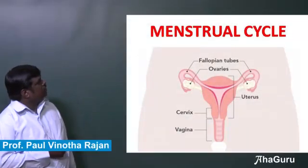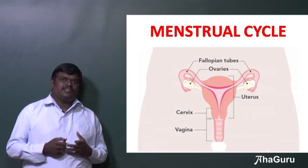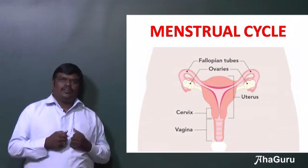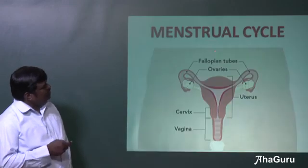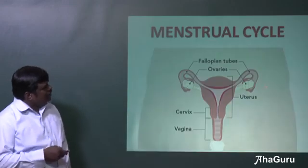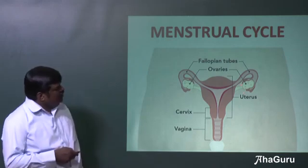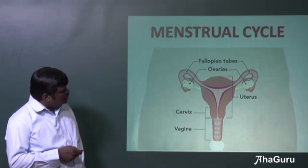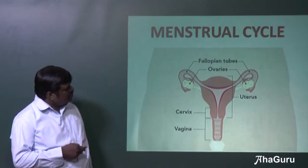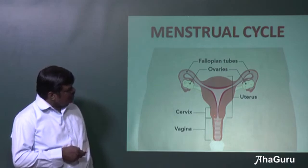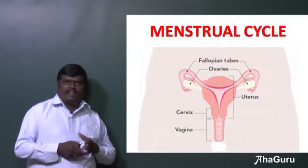Menstrual cycle. This is a reproductive cycle which occurs in human females, and this menstrual cycle involves the whole reproductive organ of females. You can see here: this is the ovary, this is the fallopian tube, this region is called the uterus and cervix, and vagina. This is the typical structure of a female reproductive system.